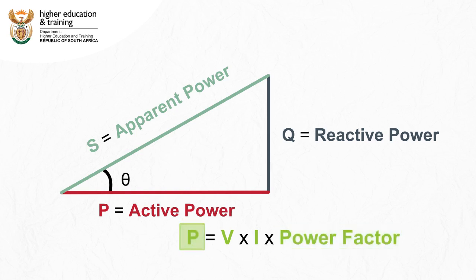Therefore, active power, or just power for short, is voltage multiplied by current multiplied by the power factor. Or, power is voltage multiplied by current multiplied by the cosine of theta.